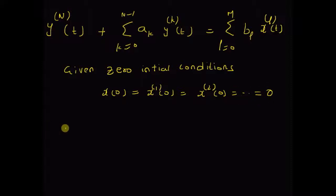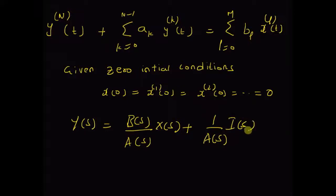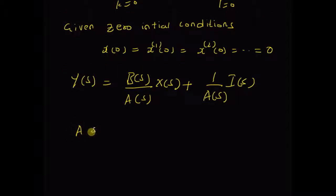We want to prove that the Laplace transform Y(s) can be written as the ratio of the polynomials B(s) and A(s) multiplied by X(s), plus 1 over A(s) multiplied by I(s), where A(s) the polynomial is equal to the sum k equal to 0 to n,